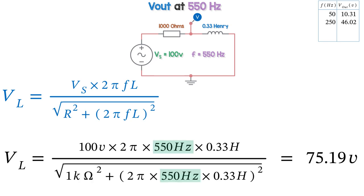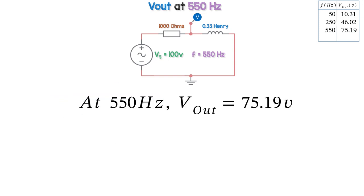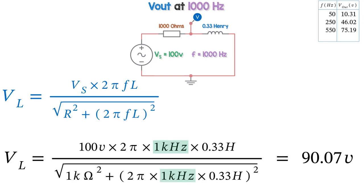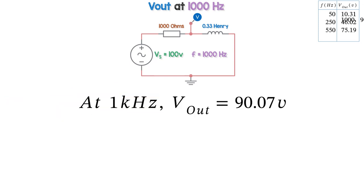The only variable that changes is frequency, which makes our calculations really easy. We just change the amount of hertz each time. And finally, at 1kHz, the output is 90.07 volts. So the output is rising as frequency rises.